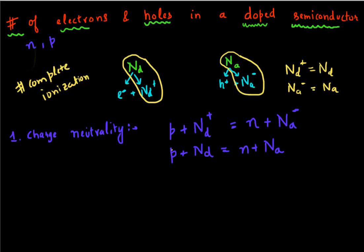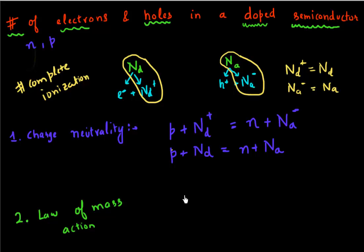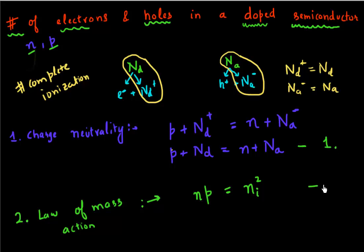The other condition I can use is the law of mass action, which we derived previously. This very important law says that the product of my electrons and holes remains constant and is equal to the square of the intrinsic carrier density ni squared. So now if I need to solve for N and P, I have two equations and two variables.